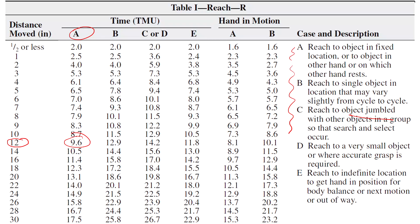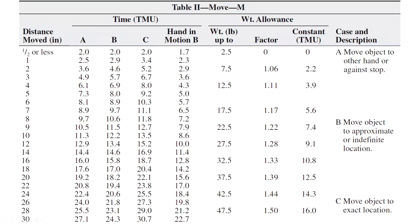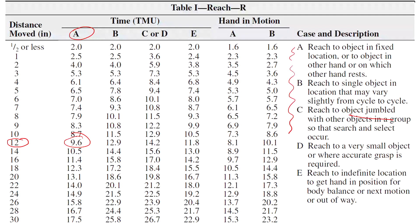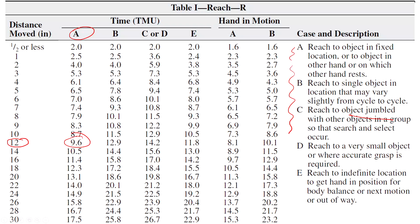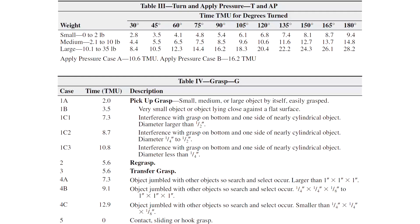The move table is different from reach: reach is when we move empty-handed, while move is when we have something in our hand. You don't have to memorize it — the move table has weight in it, whereas the reach table does not. Then there is the turning and apply pressure table, which has two cases: case A and case B.